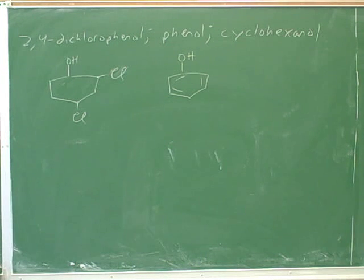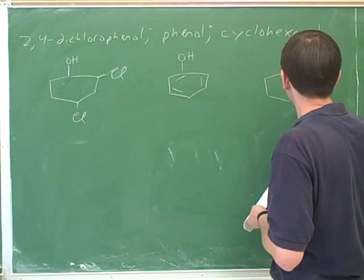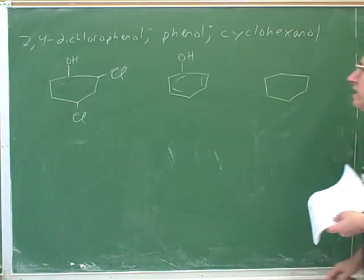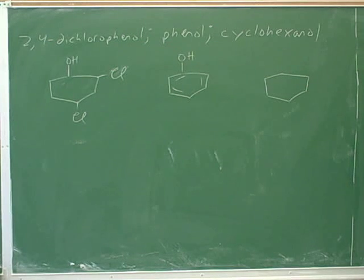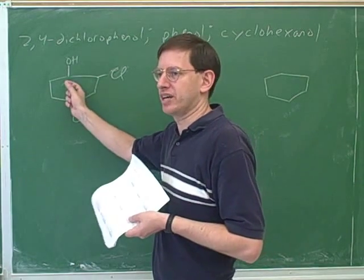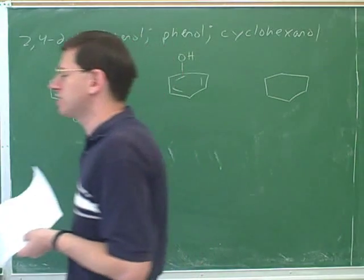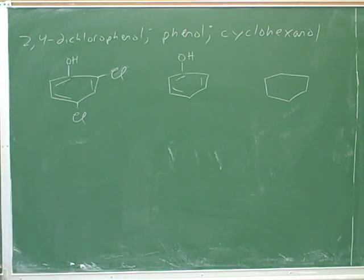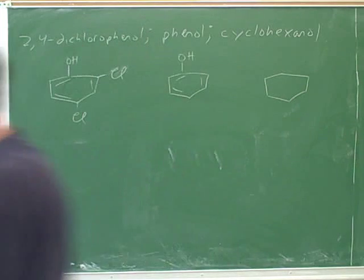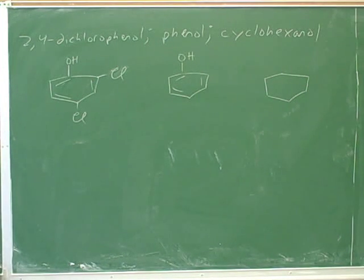I'm drawing cyclohexanol. Hex means six carbons, and there are no double bonds — so this is not benzene. Phenol, on the other hand, should have the double bonds because it is benzene-based. Just because this is a chapter about benzene doesn't mean every single molecule is benzene. This one is just a normal ring with an alcohol.